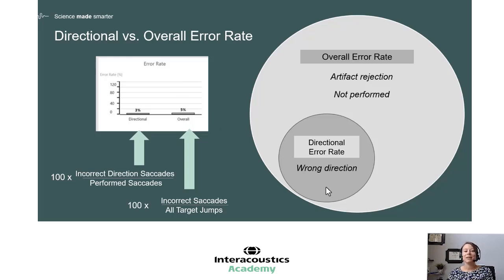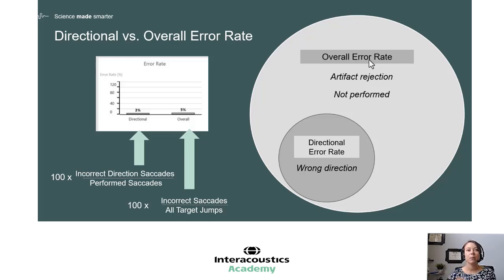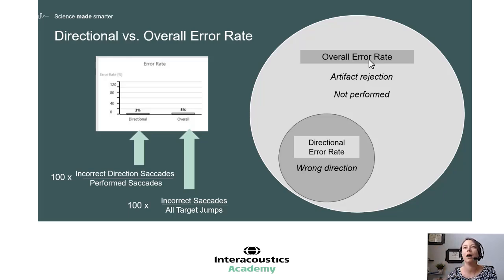The overall error rate not only includes the directional error rate — how many times people went the wrong direction — but also all artifacts rejected such as blinks, and all saccades that were not performed. Similar to spectral purity in rotational chair testing, it's a pulse on how valid or how noisy the response is. You wouldn't want a significant difference between the directional error rate and overall error rate. For example, if the directional error rate is 3% but the overall error rate is 90%, that means there's quite a bit of artifact rejection or missing saccades, and you may want to be very careful with interpretation.